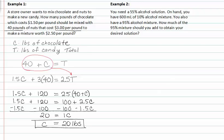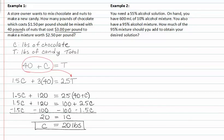In example two, we need a 55% alcohol solution. On hand you have 600 milliliters of 10% alcohol mixture and you also have 95% alcohol mixture. How much of the 95% alcohol mixture should you add to obtain your desired solution?